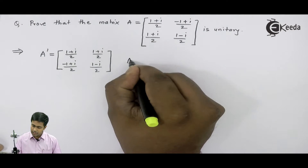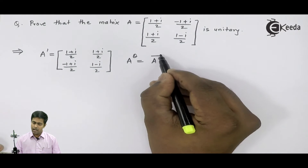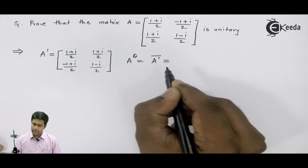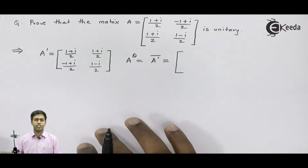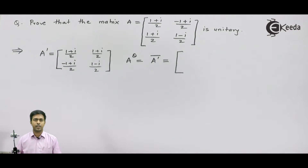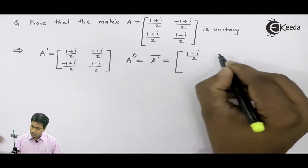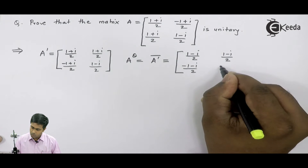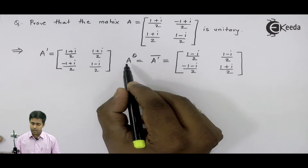Now let us find out the transpose conjugate, that is A-theta, which is the conjugate of A-dash, that is the transpose. To find the conjugate, we change the sign of the imaginary terms — plus becomes minus and minus becomes plus. So this term will become (1-i)/2, again (1-i)/2, then (-1-i)/2 and (1+i)/2. Now we have the value of A-theta.